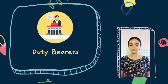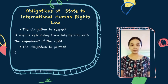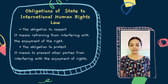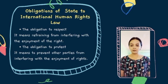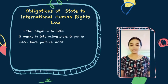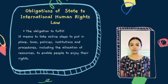The state must take all necessary steps to guarantee its citizens' rights. This includes the obligation to respect — refraining from interfering with the enjoyment of rights; the obligation to protect — preventing other parties from interfering with the enjoyment of rights; and the obligation to fulfill — taking active steps to put in place laws, policies, institutions, and procedures, including the allocation of resources, to enable people to enjoy their rights.